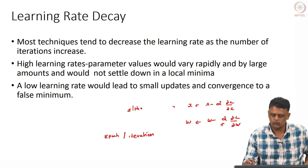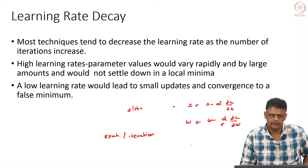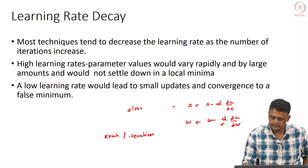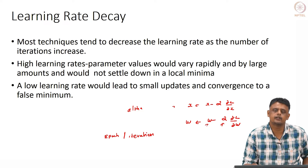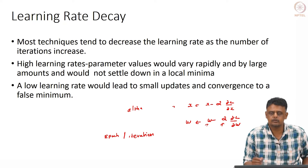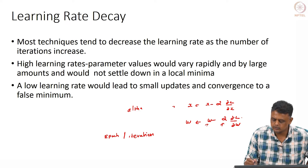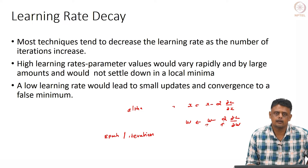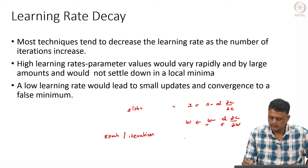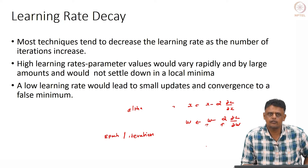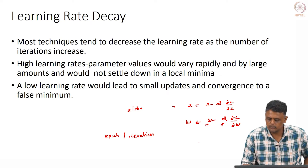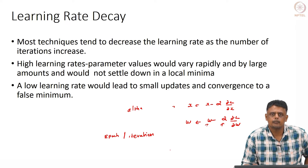From epoch to epoch you can vary your learning rate. This is important because the learning rate dictates how much you change your parameters, since the magnitude of the update depends not only on the gradient of the loss function with respect to the weights, but also on the learning rate alpha. By modulating alpha you can also modulate the magnitude of your updates.